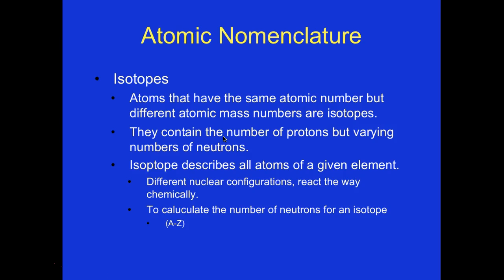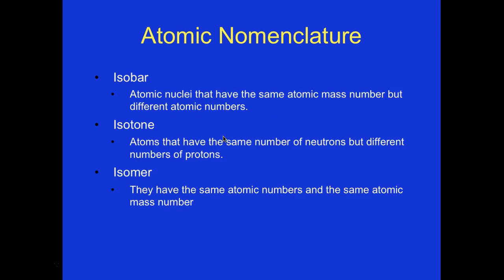Isotopes are atoms that have the same atomic number but different atomic mass numbers — they contain the same number of protons but a varying number of neutrons. Different nuclear configurations react the same chemically. To calculate the number of neutrons for an isotope, it's A minus Z. An isobar is an atomic nucleus that has the same atomic mass number but different atomic numbers. An isotone has the same number of neutrons but different numbers of protons. An isomer has the same atomic number and the same atomic mass.